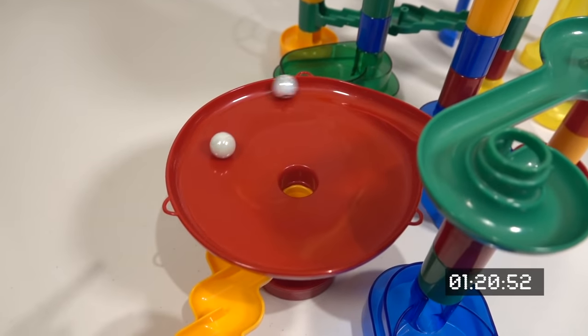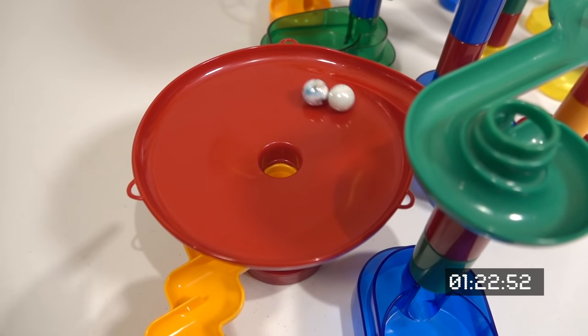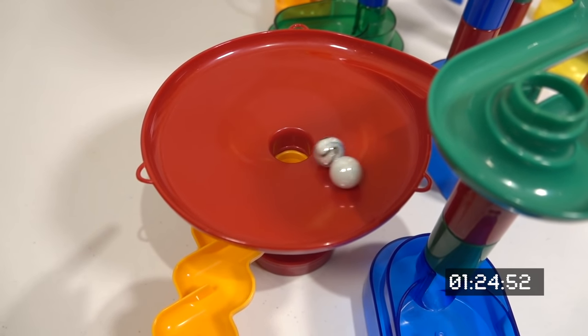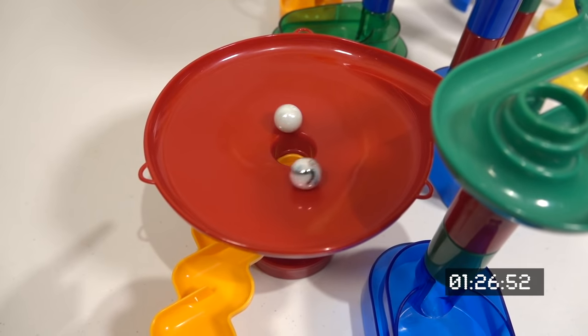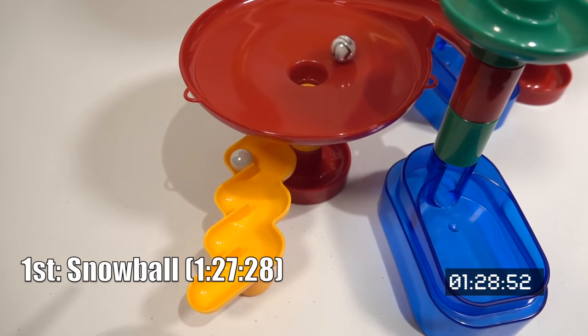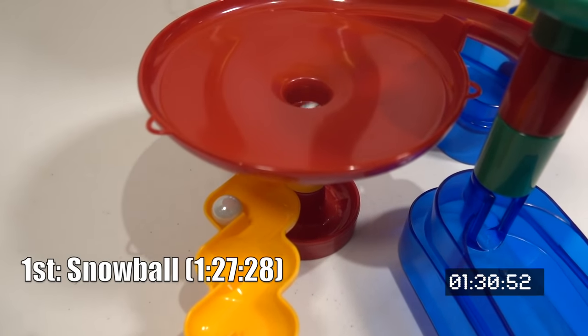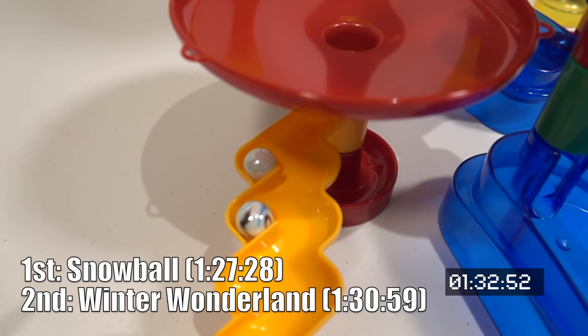Wonderland speeds past the hazard and makes a perfect hit. The race is suddenly neck and neck. Both marbles battle side to side. Snowball pushes Wonderland away, allowing him to take the win. Wonderland finishes the race in second, just behind his winter rival.